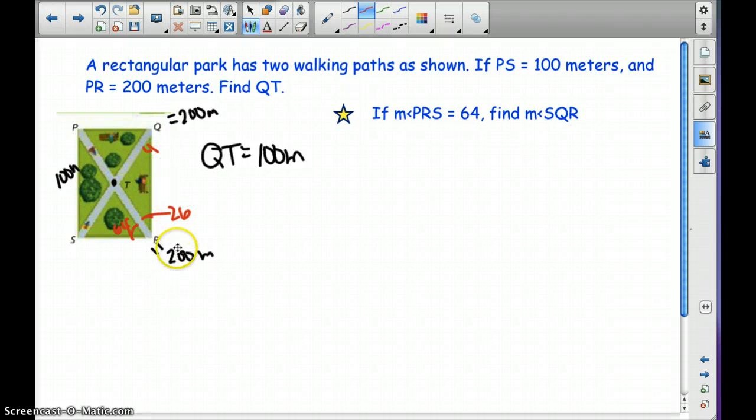Now, does that help us get this angle here, SQR? Well, we know that these two line segments have to be the same because they bisect each other and are the same length. So now we have an isosceles triangle. And what does our isosceles triangle tell us about the base angles? They have to be the same. So the measure of angle SQR is 26. Rewatch that portion if you didn't understand how I got 26.